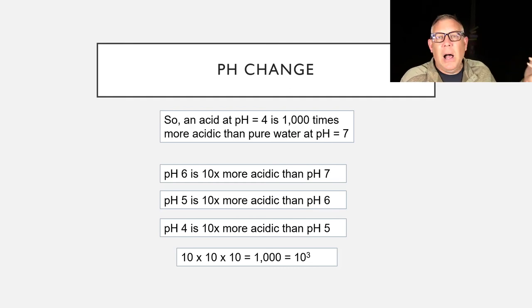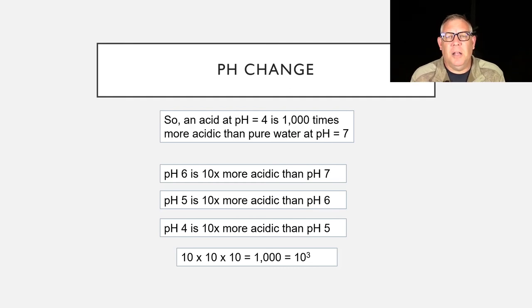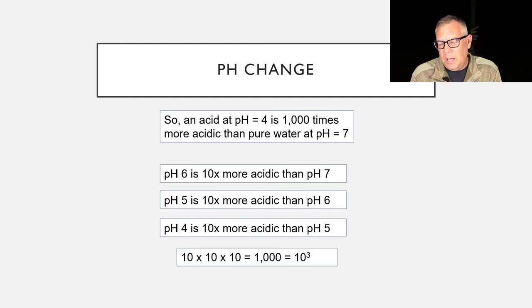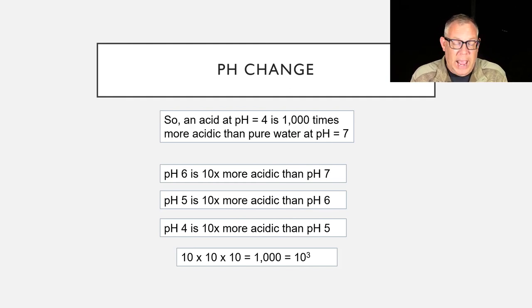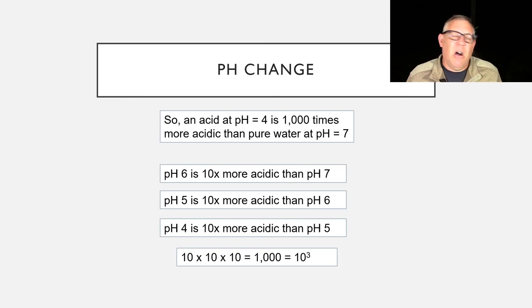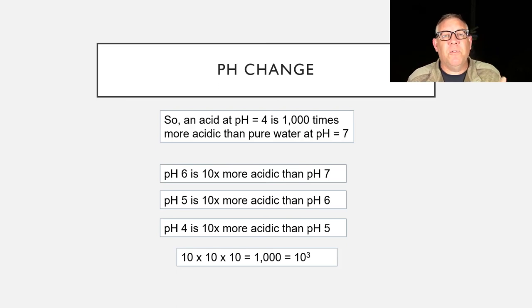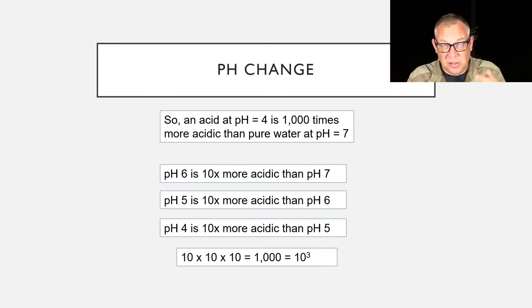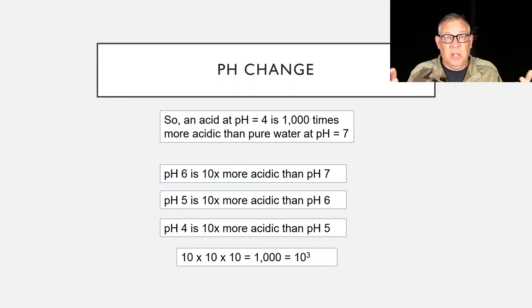In my pond, for example, pH is an important parameter. The pH can fluctuate from like 8 to 10 during the day. You might think 'that's only two pH units,' but that's a hundredfold change in hydrogen ions. And remember those hydrogen ions are very chemically reactive — that's a huge deal. So that's another important thing to know about the pH scale.